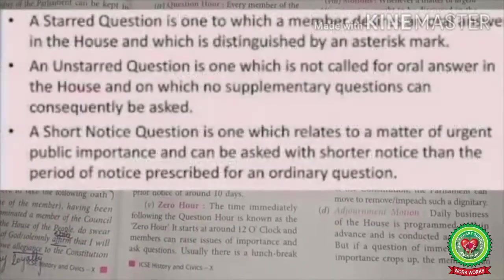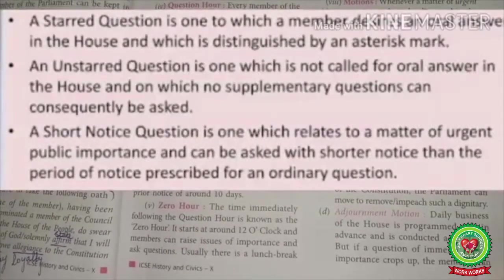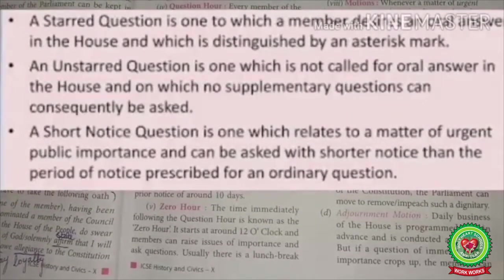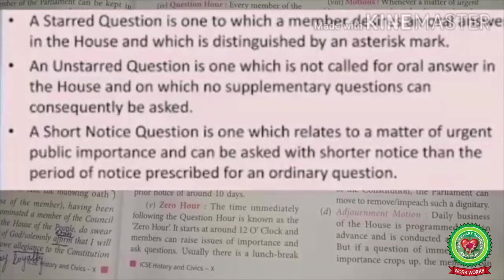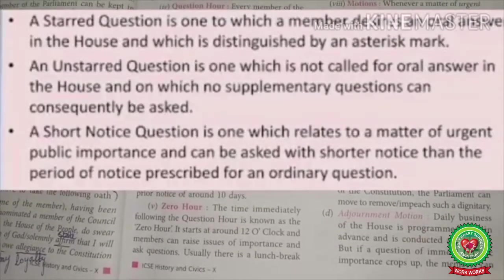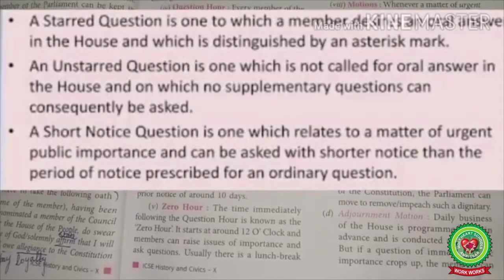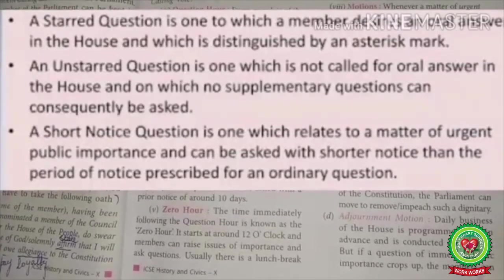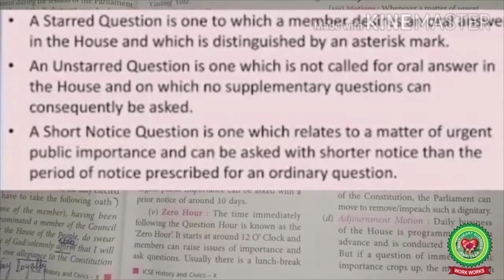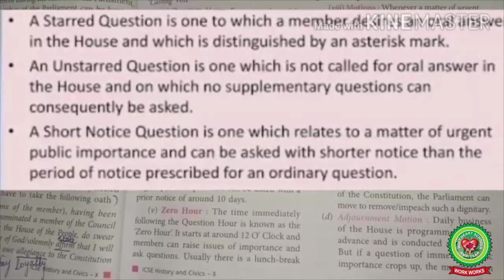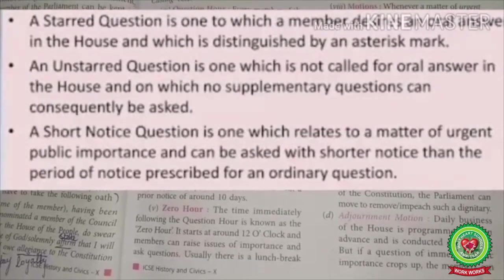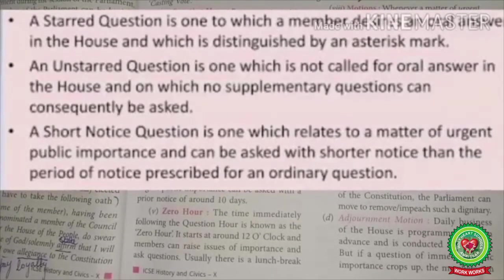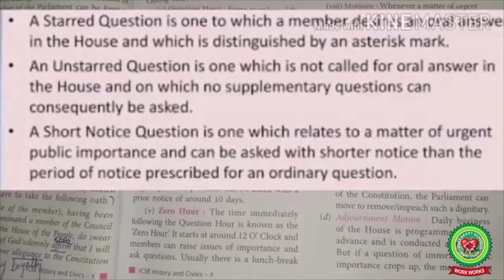An unstarred question is one to which a written answer is desired by the member. A starred question is one to which a member desires an oral answer from the Minister in the House. The member is allowed to ask a supplementary question with the permission of the Speaker. A short notice question can be given on a matter of public importance for oral answer at a notice of less than 10 days.